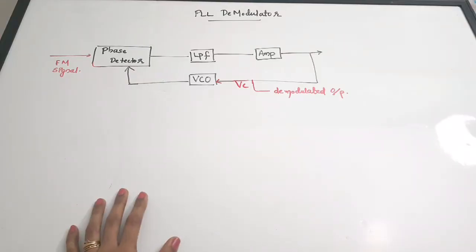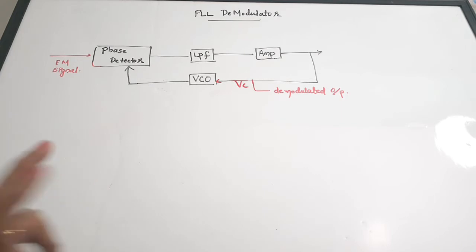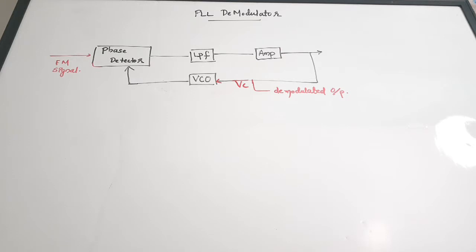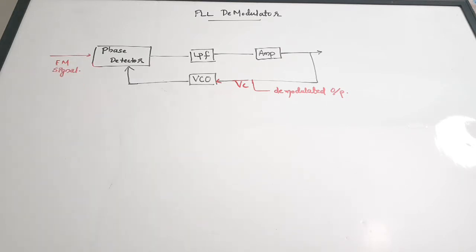In this video we are going to discuss the PLL demodulator. PLL is Phase-Locked Loop, and it is one of the basic types of demodulators used for demodulating FM signals.